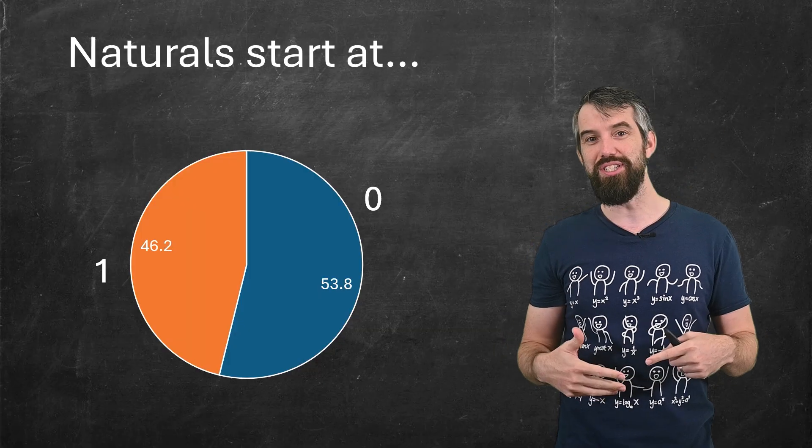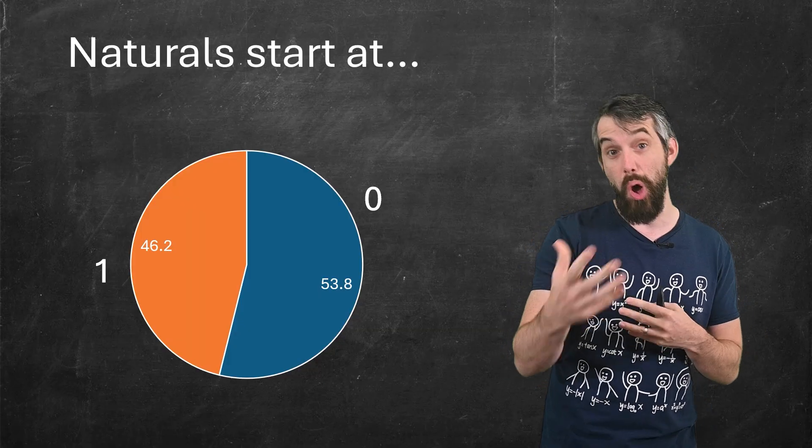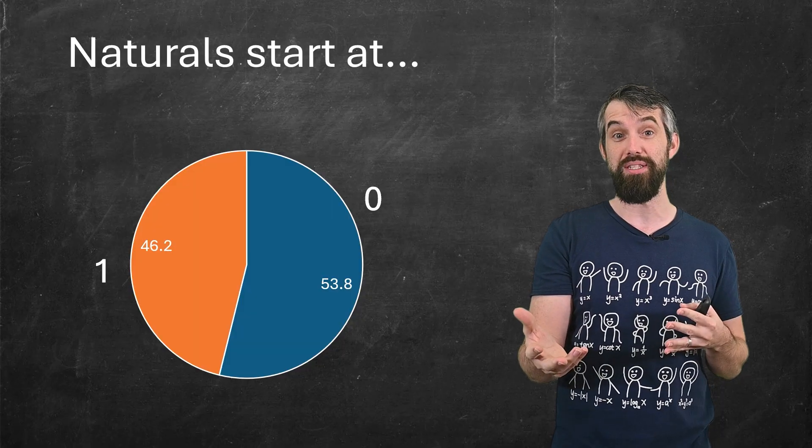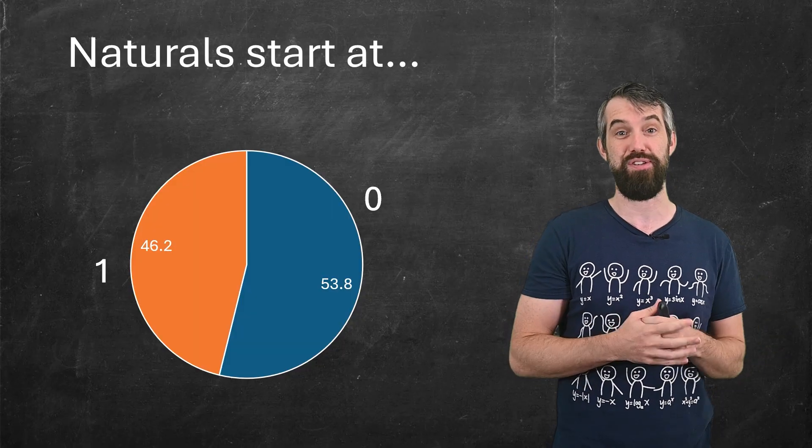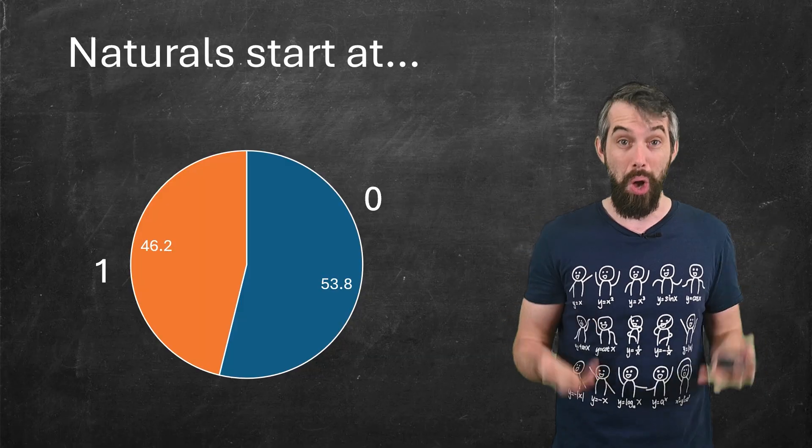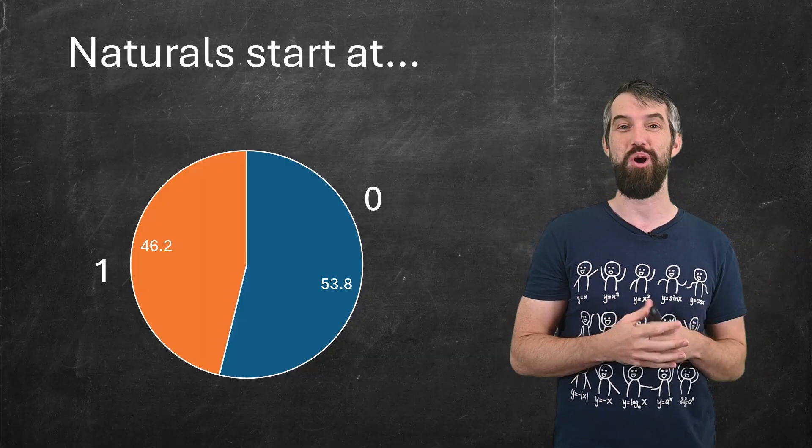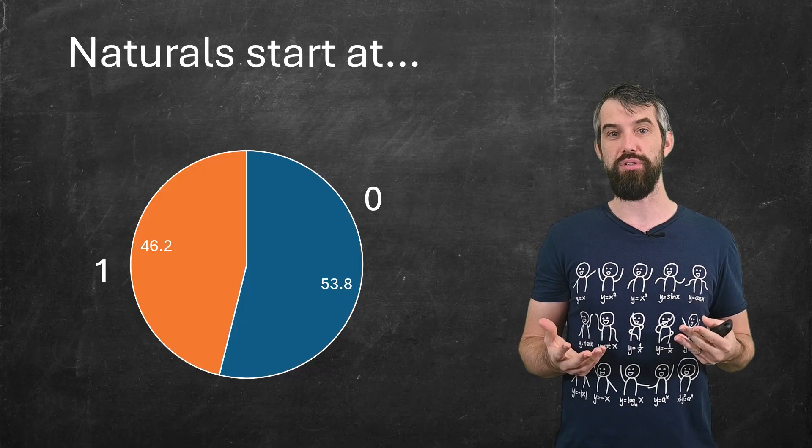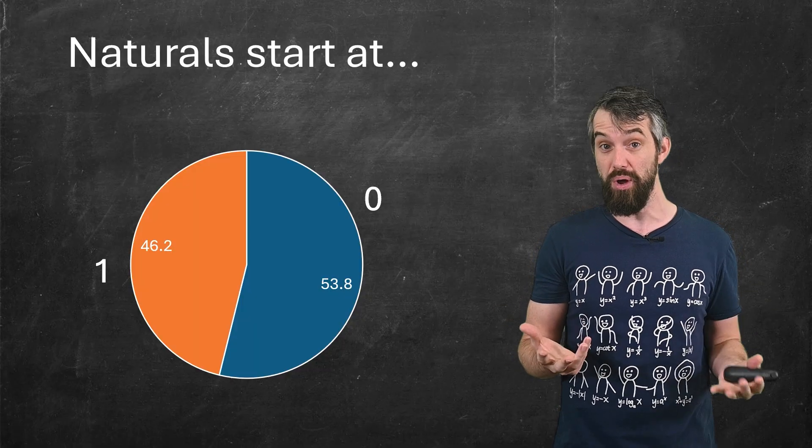If you want to avoid this controversy, you can use things, for example, non-negative integers. That's going to include zero. Or you could say positive integers. That's going to start it at one. There's ways to avoid around it, but it's still common, still natural, if you don't mind me saying, to just talk about the naturals. And sometimes people mean that they've got zero in it, and sometimes they don't.